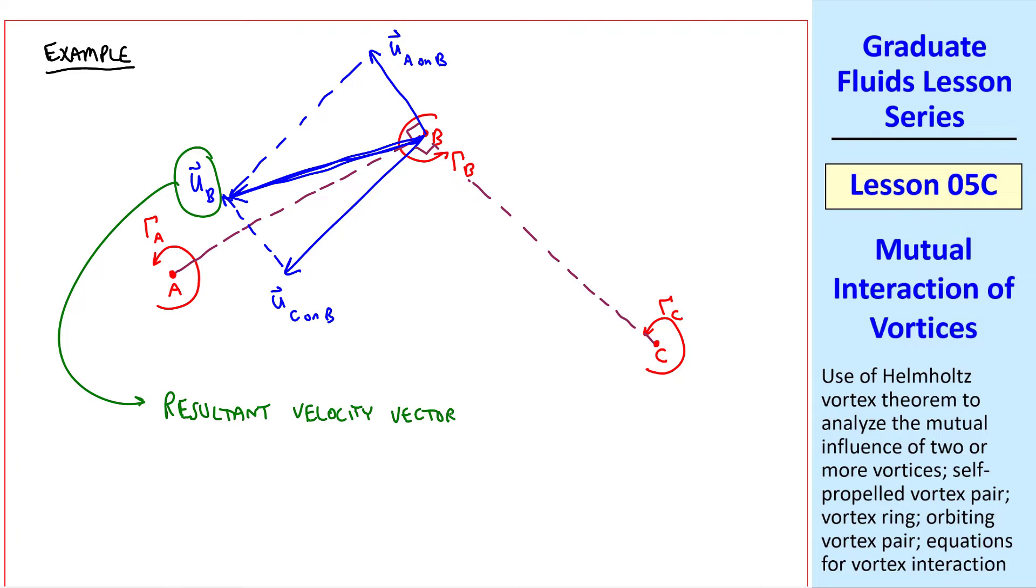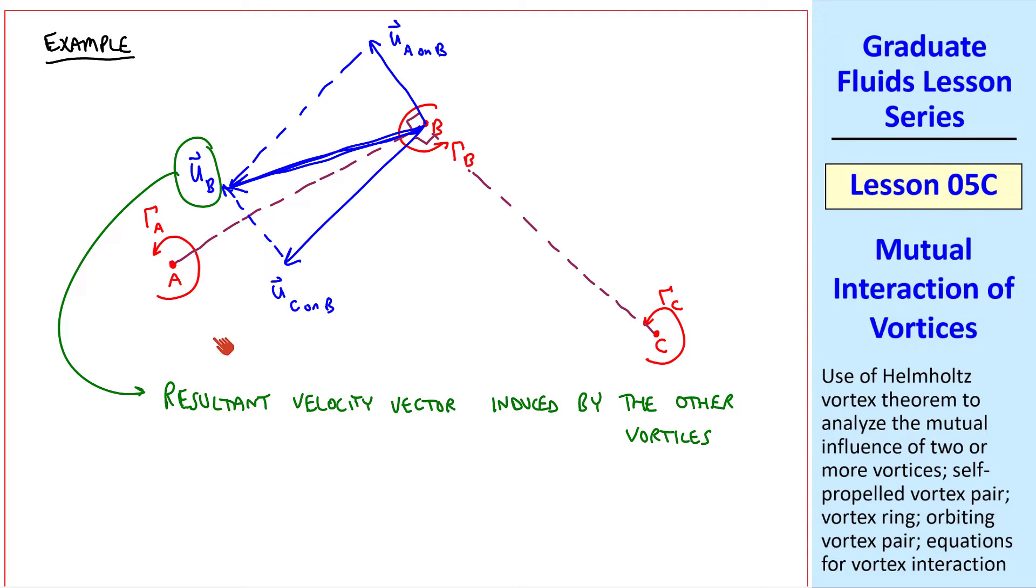u_B is the resultant velocity vector induced by the other vortices. Note that vortex B has no influence on itself. It just causes the flow to go around it. Similarly, B would make C move in this direction. Vortex B would make A move in this direction, and vortex A would make vortex C move in this direction. If you figure out the resultant velocity of vortex A and vortex C, and you let that march in time, you can predict where these vortices will go.